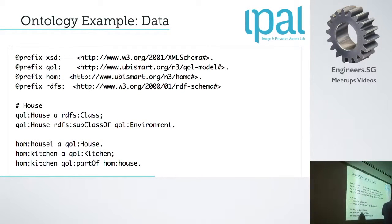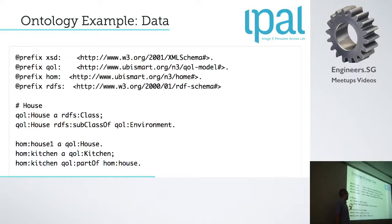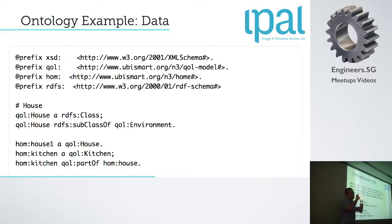Let me show you an example. Here is an ontology — it's how we represent data in our system and in the semantic web. Each thing in the semantic web has a URI: each predicate, each subject, each object has its own URI, so this data is open. Here I can show you the URIs and the representation of the triple. I can say: a house is a class; a house is a subclass of environment; house-one is a house; a kitchen is a type of kitchen; and this instance of kitchen is part of the house. We design all our data using triples — subject, predicate, and object.